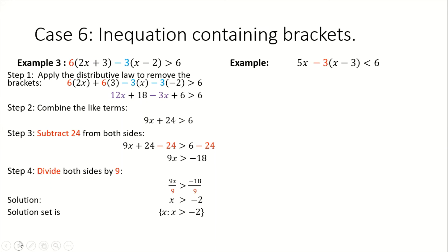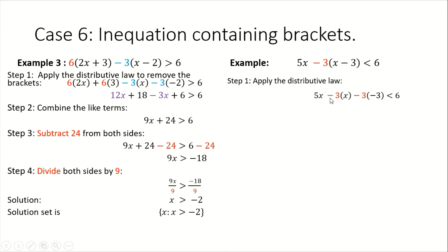Let's look at our final example. Example 4 states: 5x minus 3 times (x minus 3) is less than 6. Note we have a bracket, so the first thing we need to do is remove the bracket by applying the distributive law. We're going to take that minus 3 and distribute it to the x and also to the negative 3 — in other words, multiply each term inside of the bracket. We'll keep our 5x as it is.